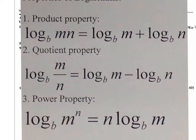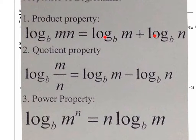The same applies to the quotient property. Expanding means taking one log and making two of them — putting the numerator in the first and the denominator in the second with a subtraction between them. Going backwards is called condensing. Most of the time in equations we'll be condensing, because you have two logarithms on the same side and you can't eliminate the log unless it's a single logarithm.